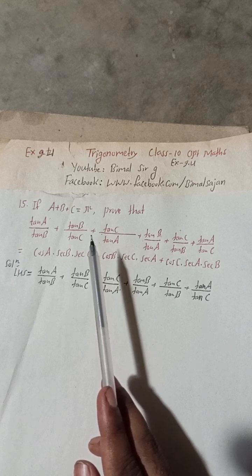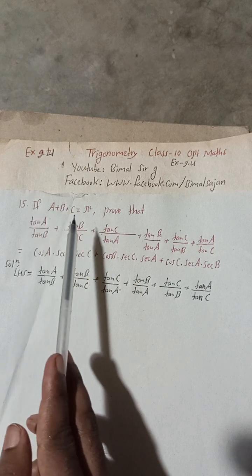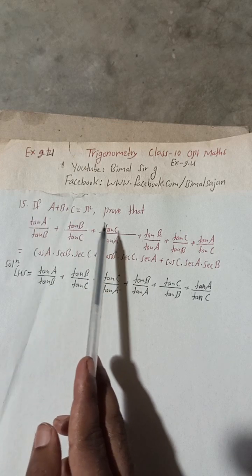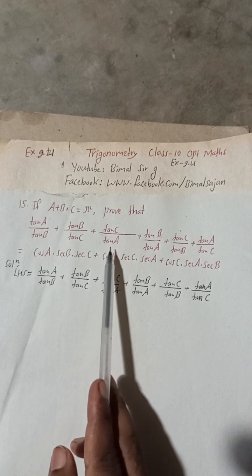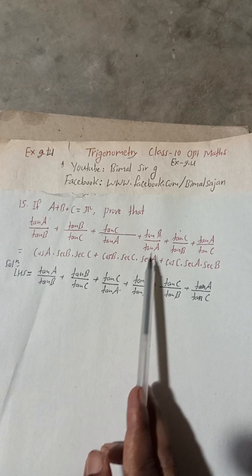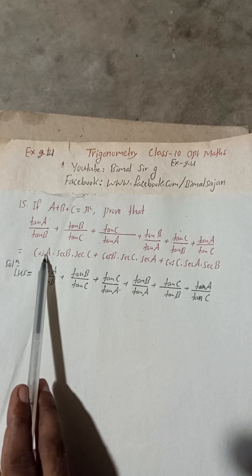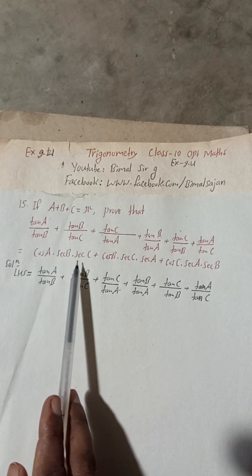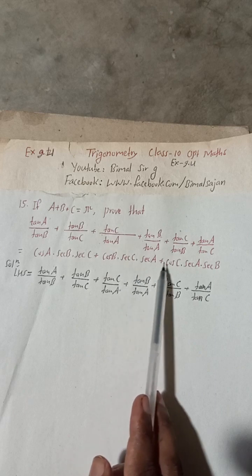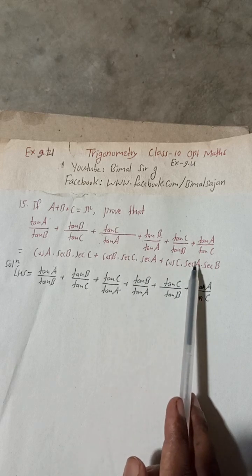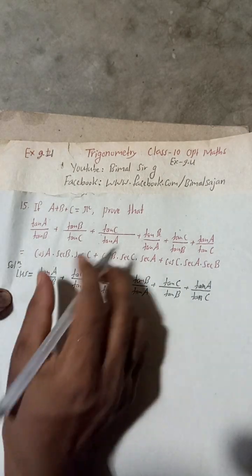Now question 15: if a plus b plus c is equal to pi, prove that tan(a)/tan(b) + tan(b)/tan(c) + tan(c)/tan(a) + tan(b)/tan(a) + tan(c)/tan(b) + tan(a)/tan(c) is equal to cos(a)·sec(b) + cos(b)·sec(c) + cos(b)·sec(c)·sec(a) + cos(c)·sec(a)·sec(b). This is to prove, so here I take the LHS.